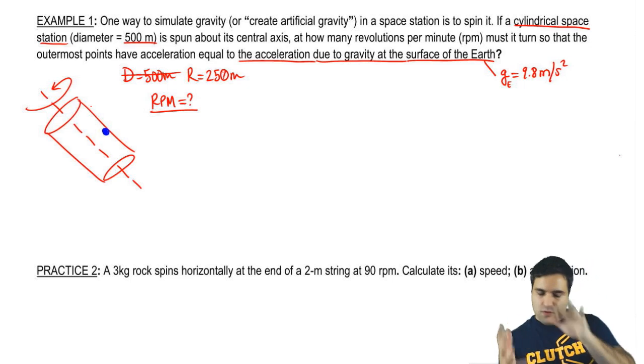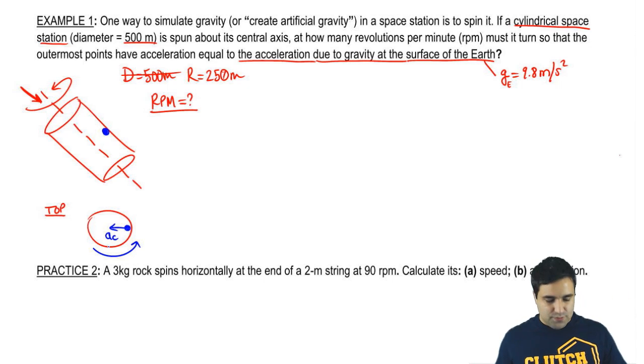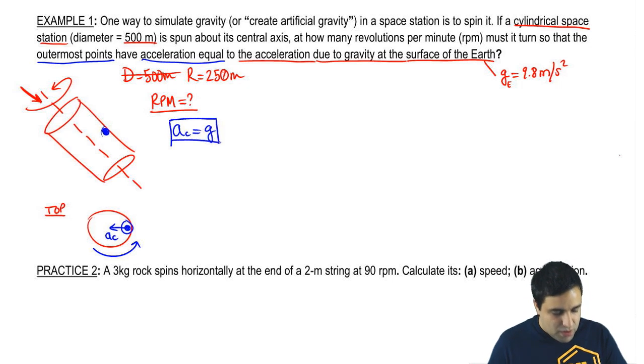So here's the idea. This is sort of a view at an angle. But if I want to have a top view, it would look like this. This thing spinning like that, and you're being pulled towards the middle, and that creates a centripetal acceleration that then simulates gravity. So the idea is, how fast do I have to spin so that the outermost points has an acceleration so that my centripetal acceleration equals g on earth. If AC equals g, what must my RPM be so that I can accomplish that?